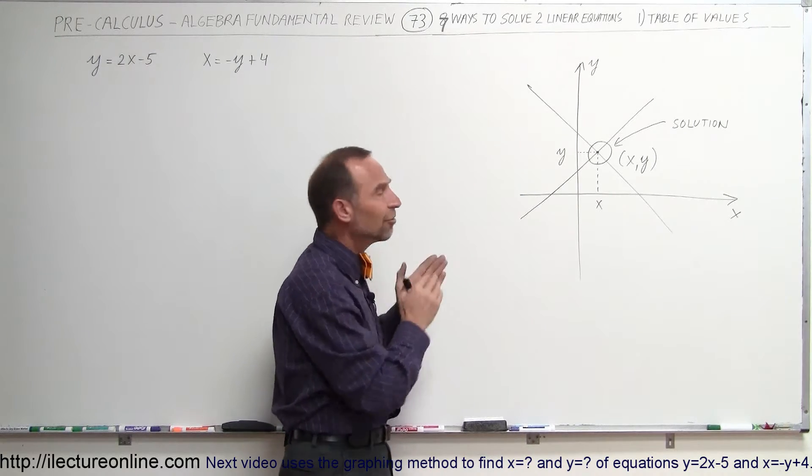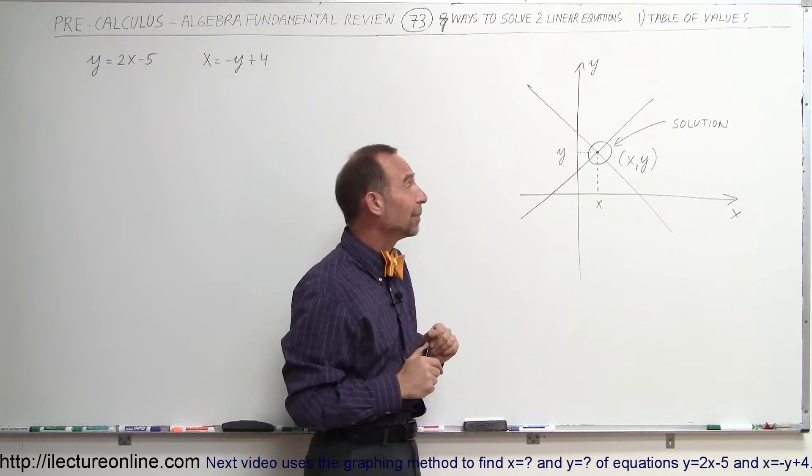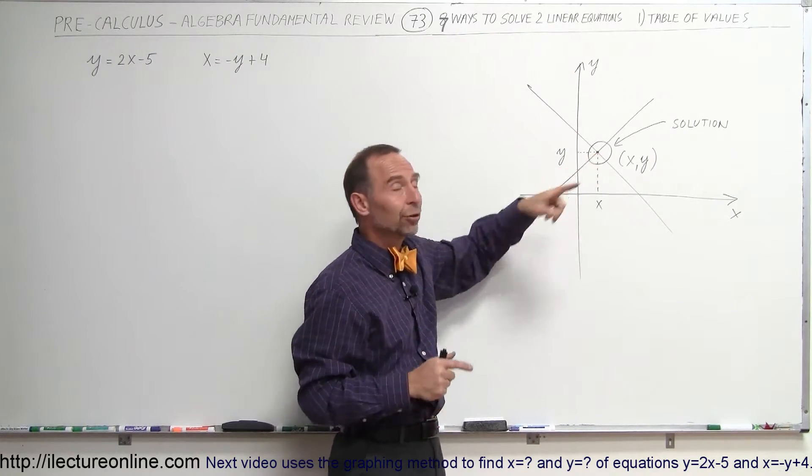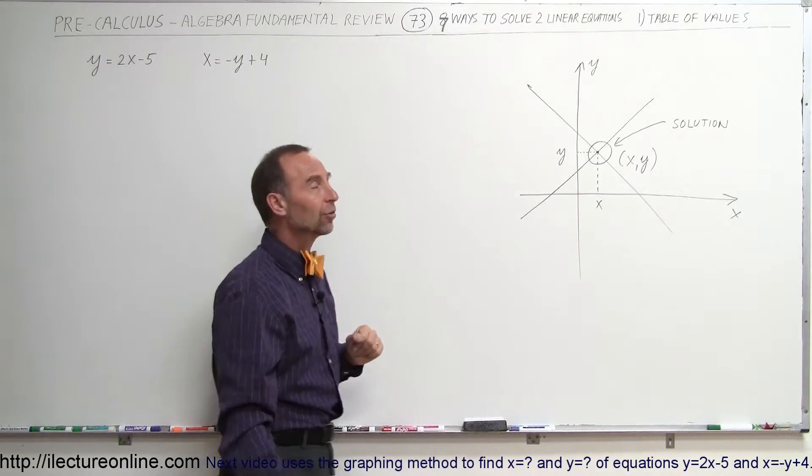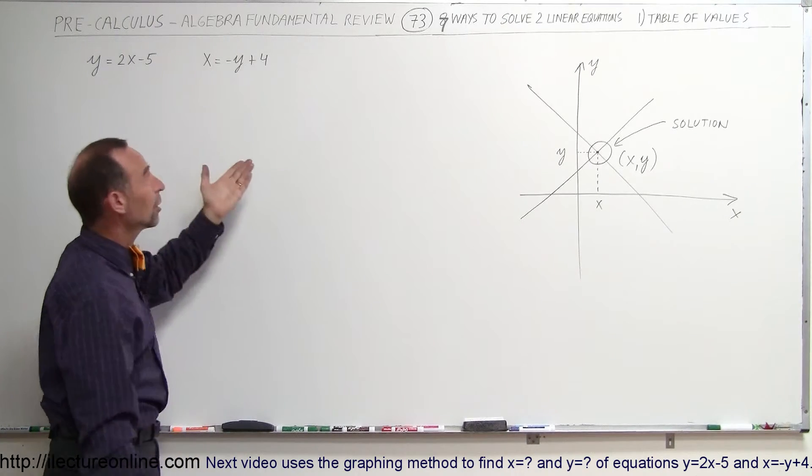And so here we're going to approach eight different ways of actually how to do that. And again, what we're doing here, we're looking for the point where they cross, we're looking for the x and y value of that particular point where they cross. So, how do we do that? Well, method number one,